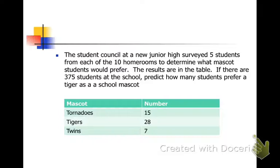First we need the experimental probability from this table. You have to add up and get the total here. They did tell us that there were five students from ten homerooms, so we could say that sounds reasonable. But adding up the numbers, it equates to out of 50. Since there are 28 out of 50 that prefer the tiger, how many out of 375?